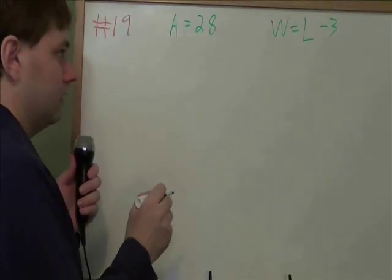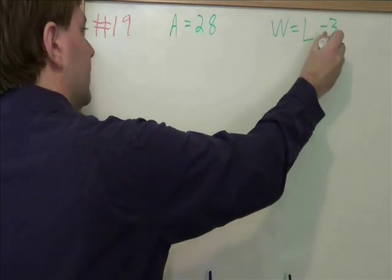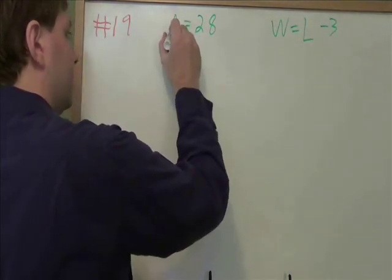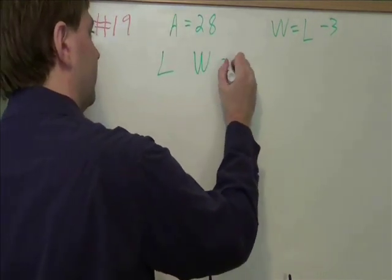Problem 19, we have a rectangular garden with an area of 28, and where the width is 3 less than the length. So we need to remember our area formula for rectangles. Area is length times width.